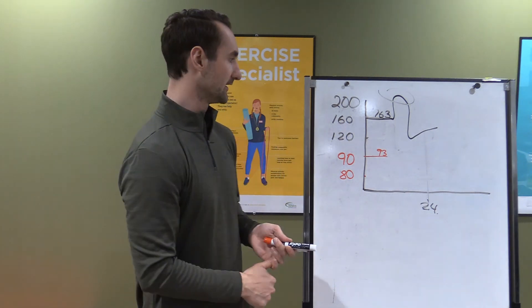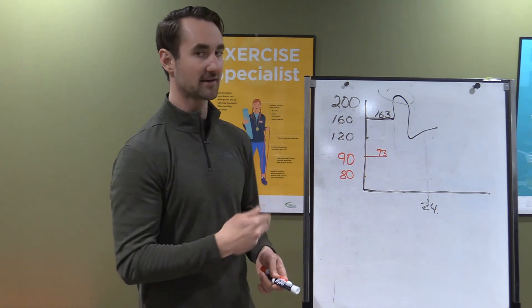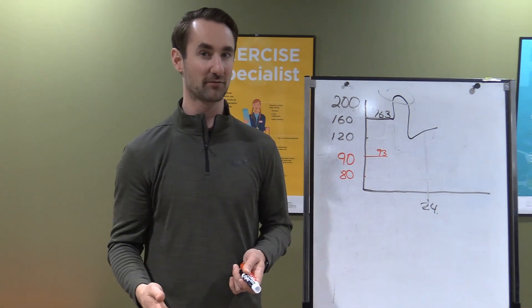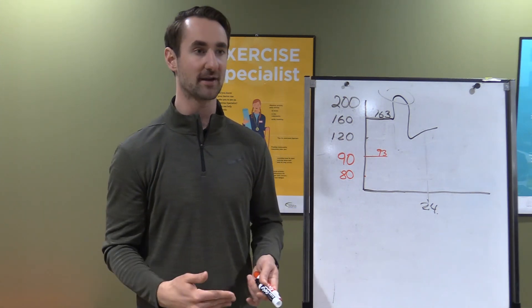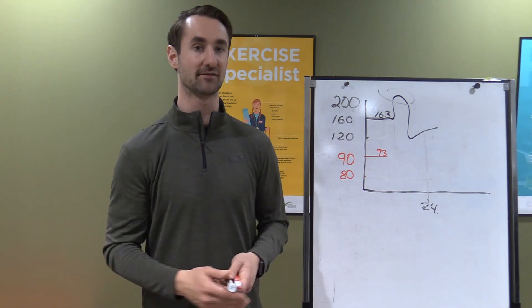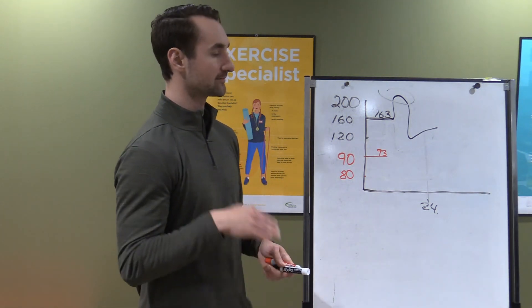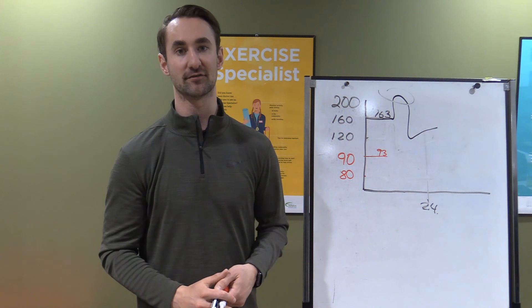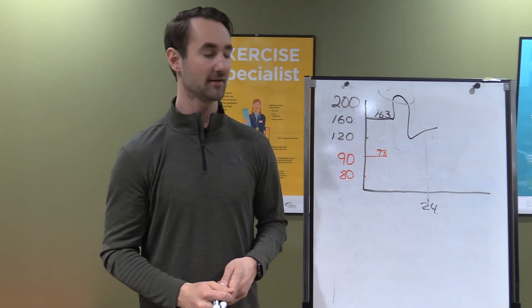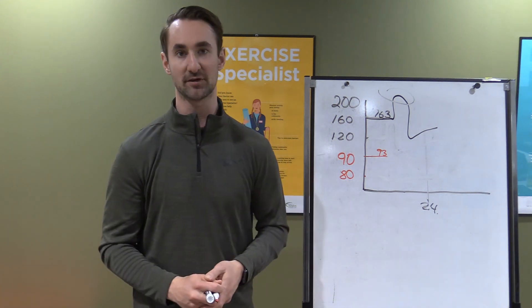So in conclusion, effects of exercise on blood pressure last about 24 hours, maybe up to 48 hours, depending on the length and intensity of your workout. And make sure your blood pressure is below 160 over 90 before starting. My name's Kevin, and this has been Exercise in High Blood Pressure.